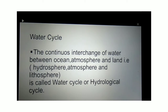What is water cycle? The continuous interchange of water between ocean, atmosphere and land — that is the hydrosphere, atmosphere and lithosphere — is called the water cycle. This is also called the hydrological cycle, meaning the non-stop change in the form of water between ocean waters, atmosphere and land. In this process, the water changes into different forms: solid, liquid and gas.